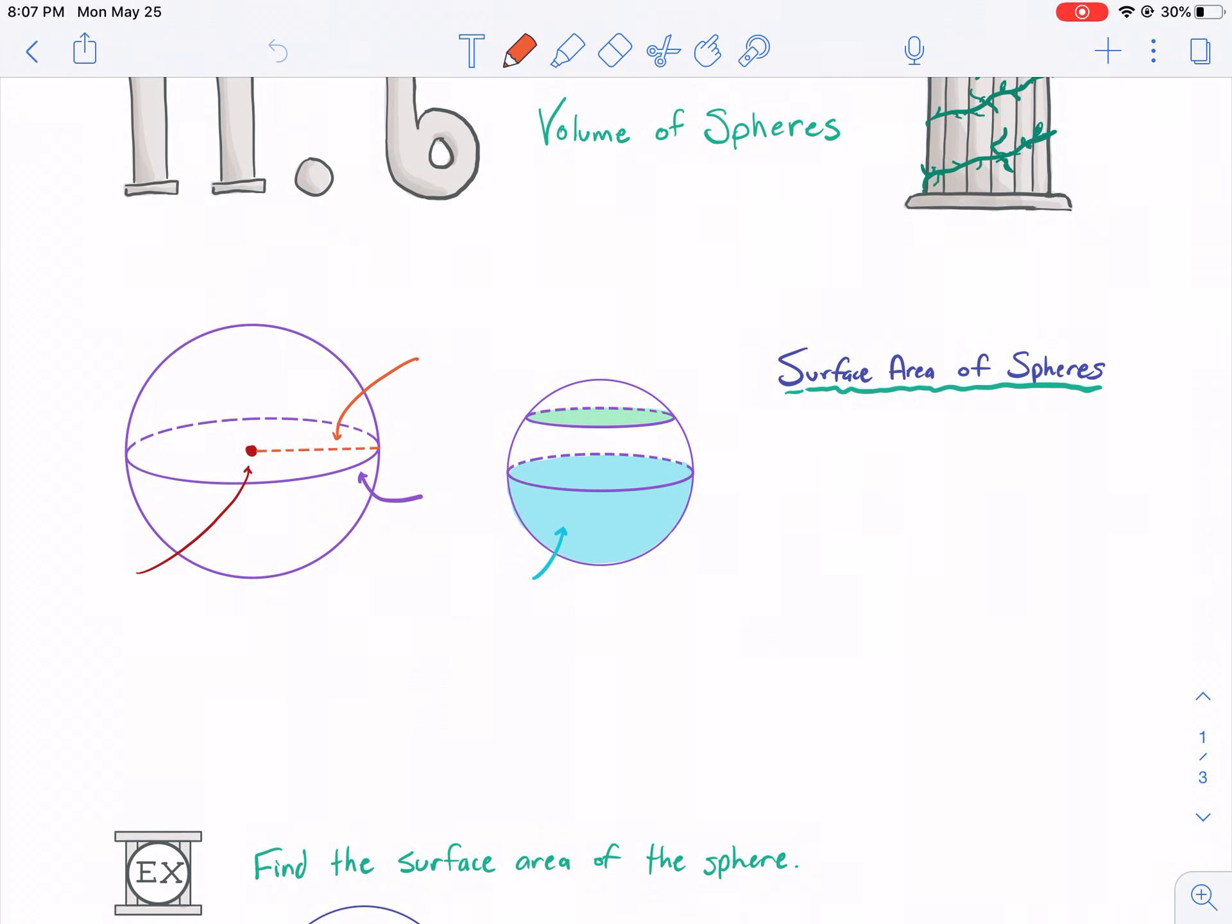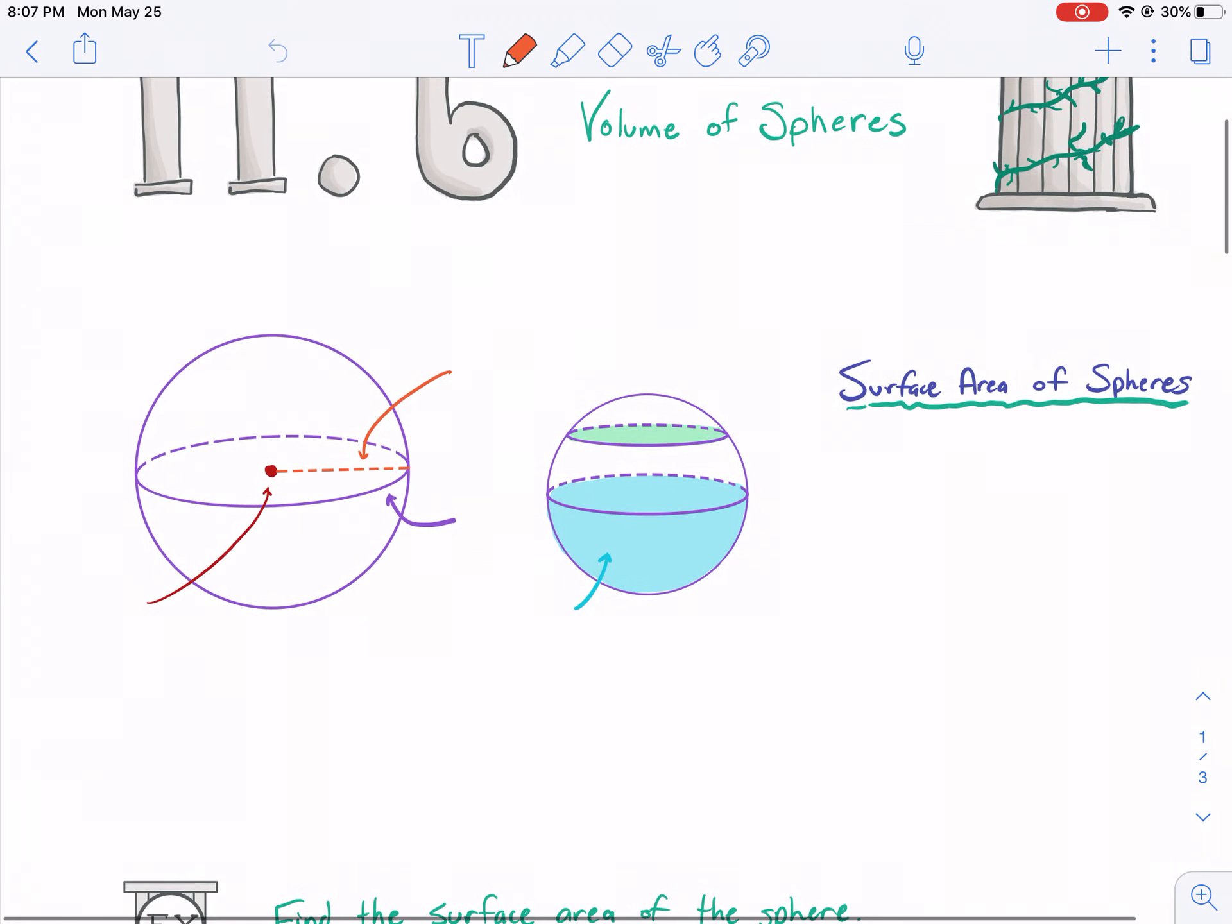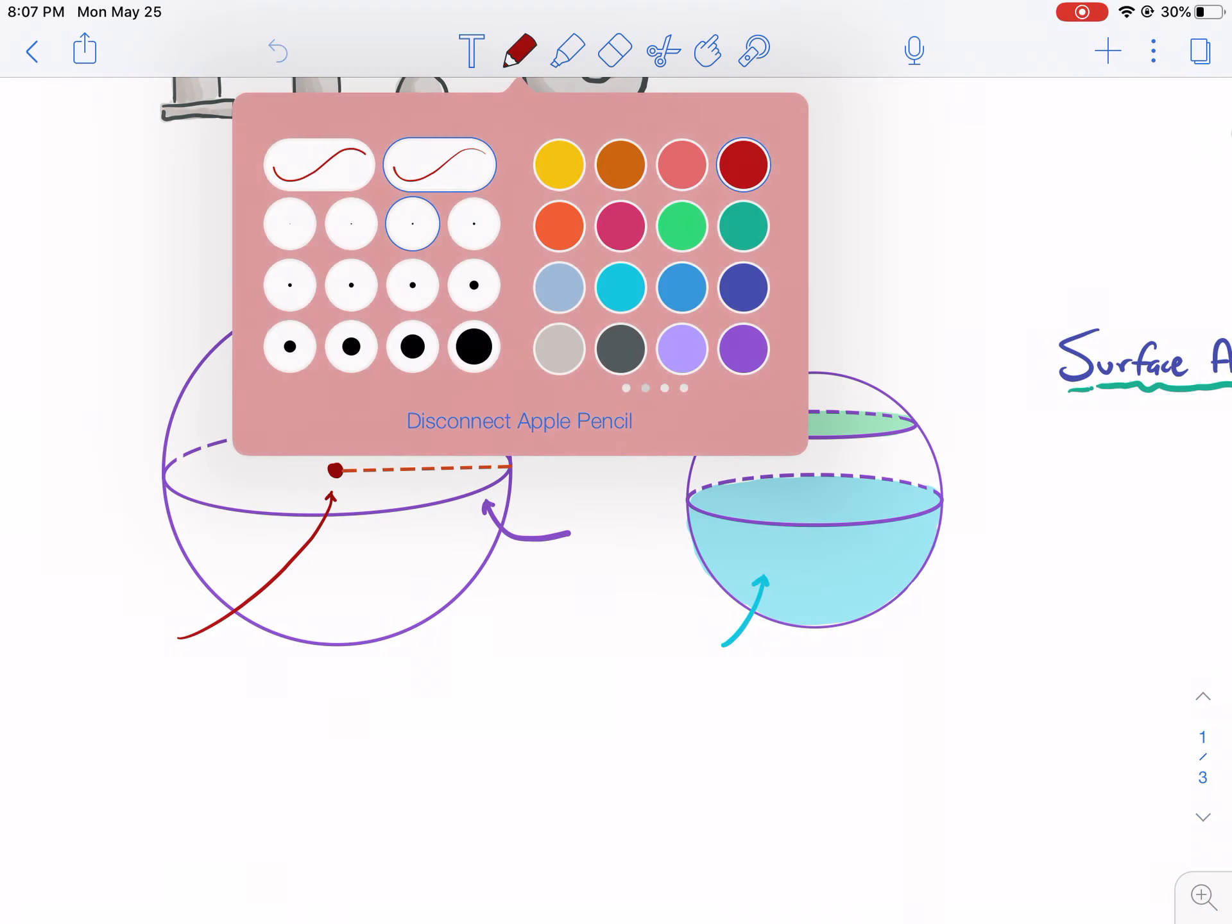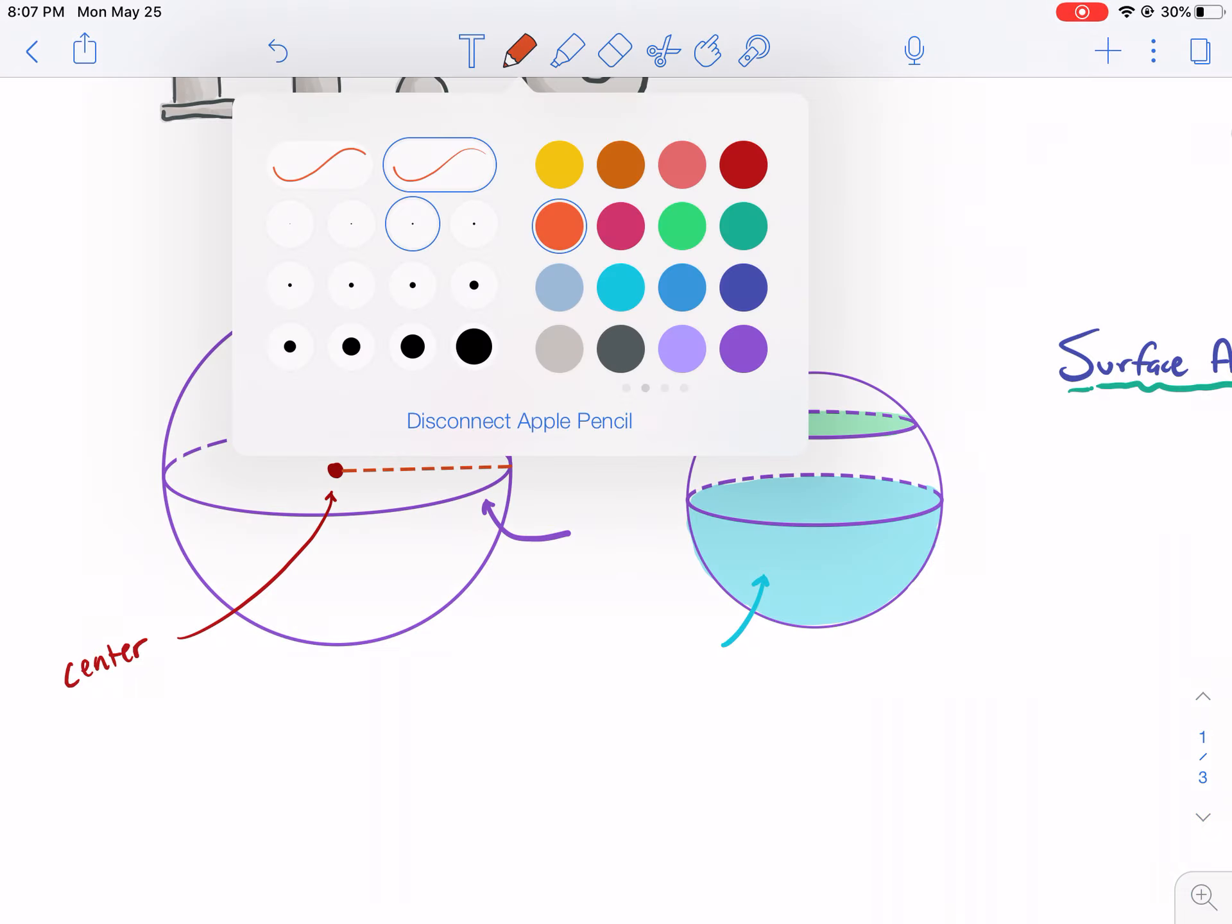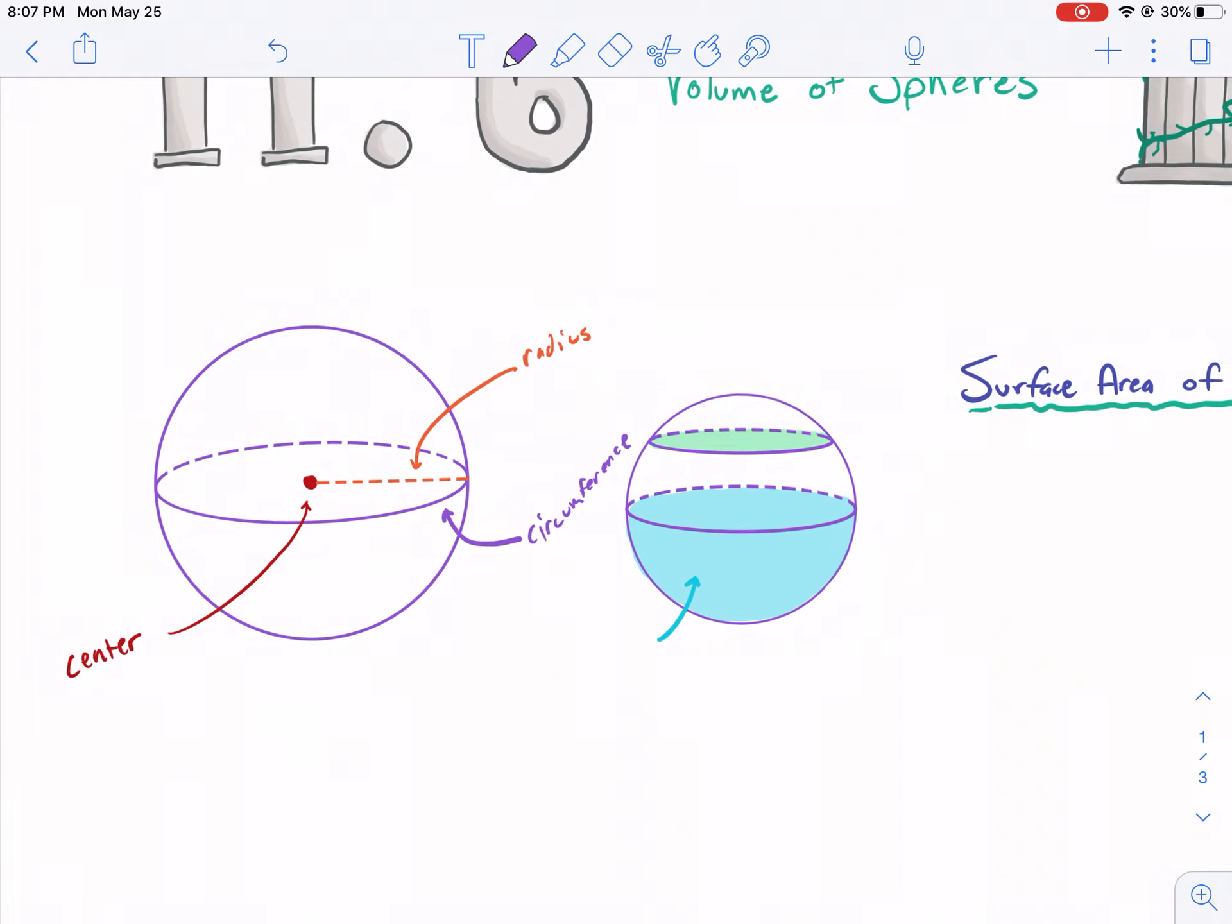This is a very relevant section. Obviously we live on a sphere called planet Earth. So let's talk about some of the basics of a sphere. In the middle of the sphere we have the center. In orange we have the radius, and then we have the circumference here in purple. There's a lot of similarities to a circle when we talk about spheres. Obviously the sphere is the three-dimensional form of the circle.